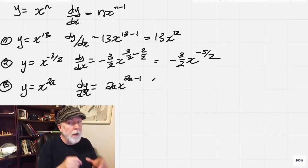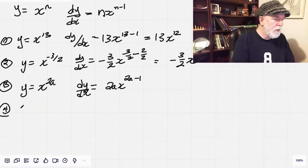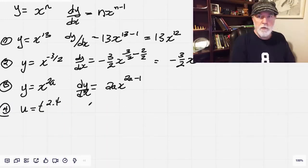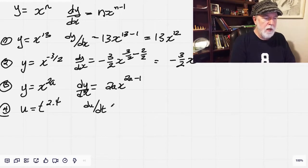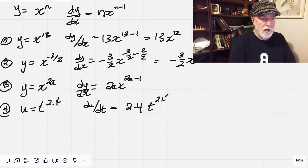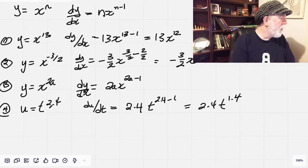We need to assign a value for a, but whatever value we assign to a, that's your dy by dx. Number 4, u equals, same as before, we're just dealing with u and t. So that all equals 2.4 times t to the power of 1.4.